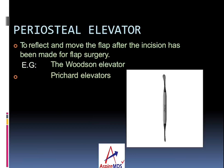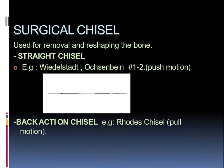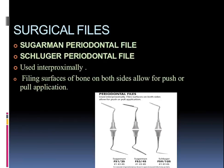Periosteal elevators are used to reflect and move the flap after the incision has been made for flap surgery; they can be the Woodson elevator or the Prichard elevator. Surgical chisels are used for removal and reshaping of bone; they can be the straight chisel, Wedelstaedt, or Rosslman chisel, used in a push motion, and the back-action chisels like Rhodes chisel, used with a pull motion. Surgical files can be of two types: Sugarman files always have a straight working end, whereas Schluger files have a curved working end, used interproximally for filing the bone surface, allowing a push-and-pull motion.